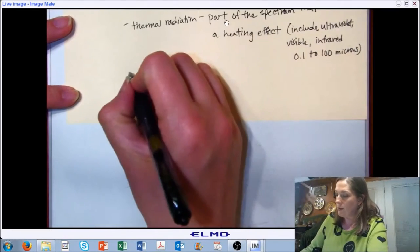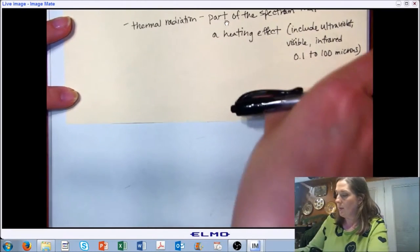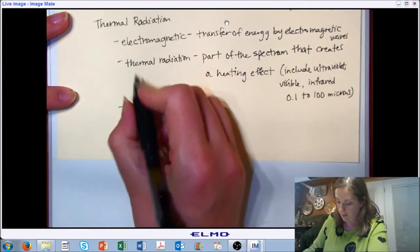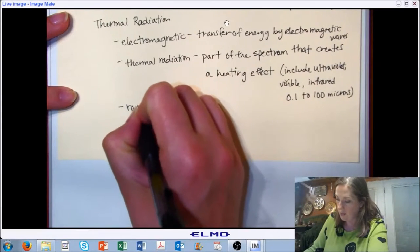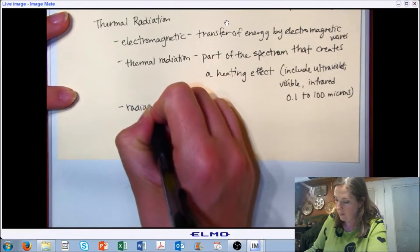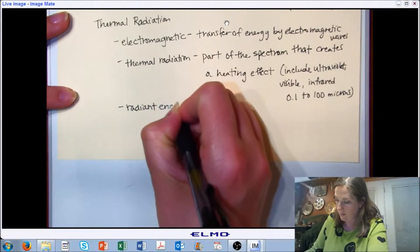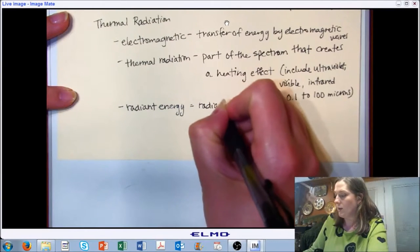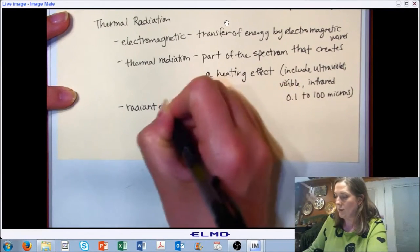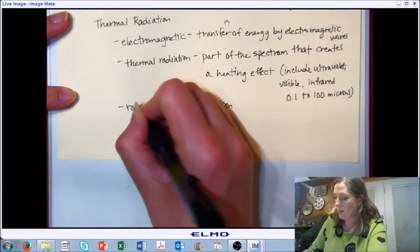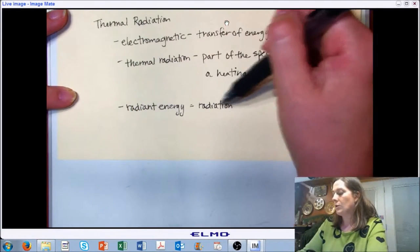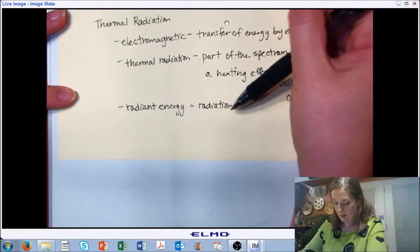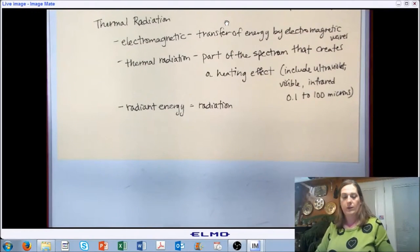We might also see terminologies that are important within the chapter that we're working on. Whenever we see the term radiant energy, it may also just be used interchangeably with radiation. Within this chapter, whenever we're talking about thermal radiation, radiant energy, or just radiation, they're all referring to the same thing. So that's important to take note of in terms of vocabulary.